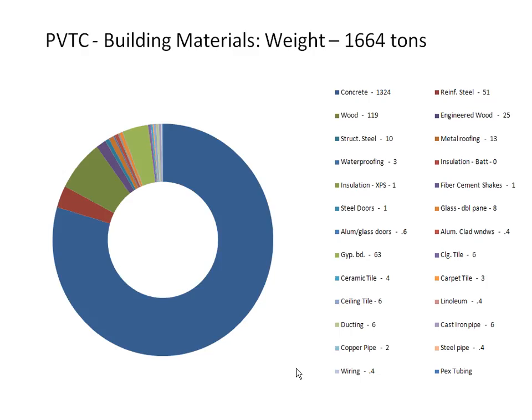To calculate the embodied carbon in a building, the first thing you have to do is figure out how much everything weighs. We took all of our material takeoffs from our cost estimate and converted all of the units into weight. Even though these look and feel like wood buildings, the weight is primarily concrete — that blue band is concrete — because concrete weighs a lot.